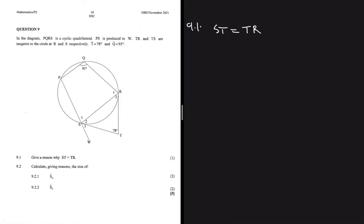ST and TR are seen to be tangents originating from the same point T. Tangents that originate from the same point are equal, so the reason is tangents from the same point or from a common point.